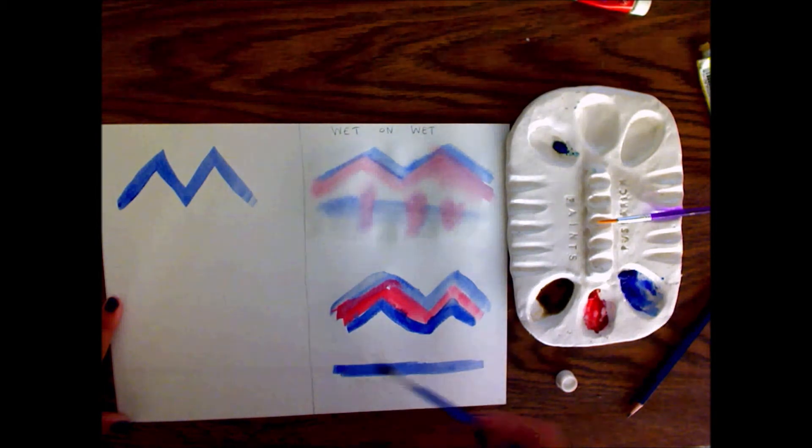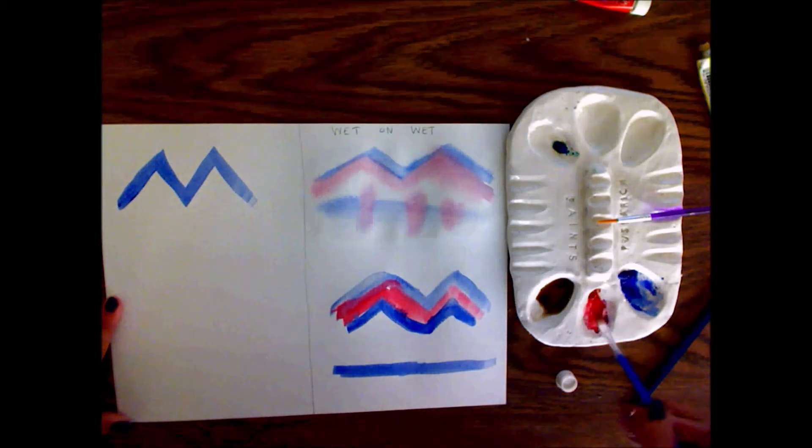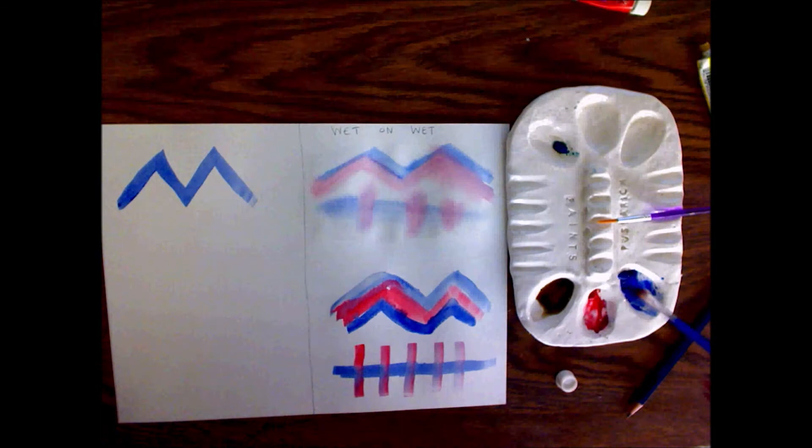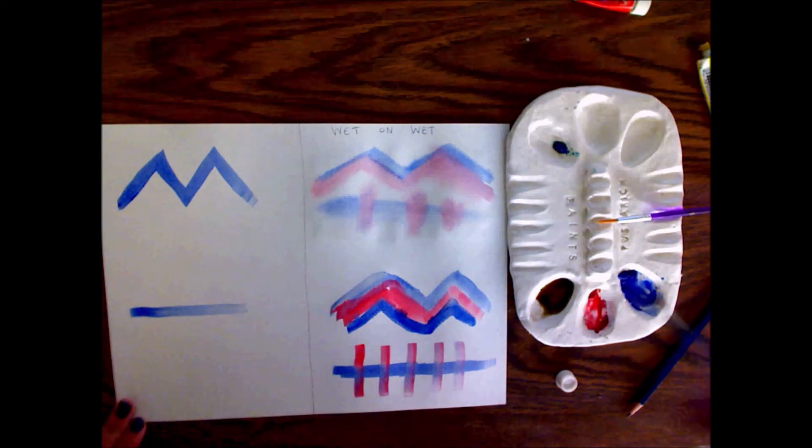They also, when you try to overlap them, if they're both wet they still blend. So they still create a mixture. As you can see here, I get a lot more blue as I go through.